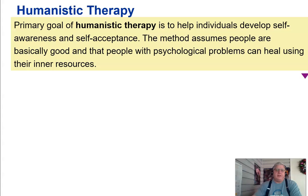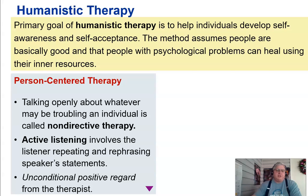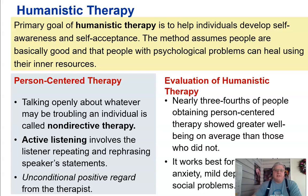When it comes to humanistic therapy, the primary goal is to help individuals develop awareness and self-acceptance. The method assumes people are basically good and that those with psychological problems can heal using their inner resources. Person-centered therapy involves talking openly about whatever may be troubling an individual and is called non-directive therapy. Active listening involves the listener repeating and rephrasing the speaker's statements, and unconditional positive regard — accepting without judgment — is important. Nearly three-fourths of people obtaining person-centered therapy showed greater well-being than those who did not, and it works best for people with anxiety, mild depression, or social problems.